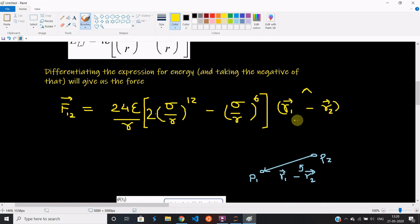First of all, let's clear up why we took r1 minus r2 as the direction and not r2 minus r1. That's because we're calculating the force on particle one, and so r1 minus r2 is this direction.